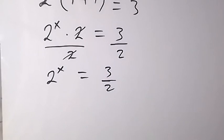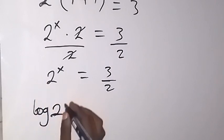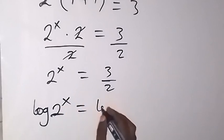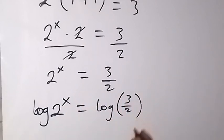Now, from here, to get the value of x, we can take the log on both sides. We have log 2 raised to power x equals log 3 over 2. So we are taking the log on both sides.